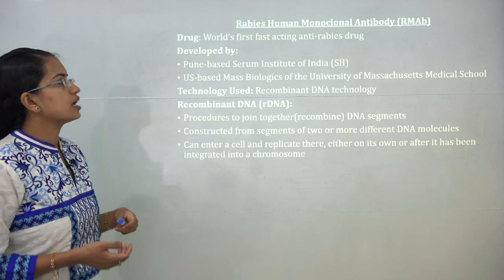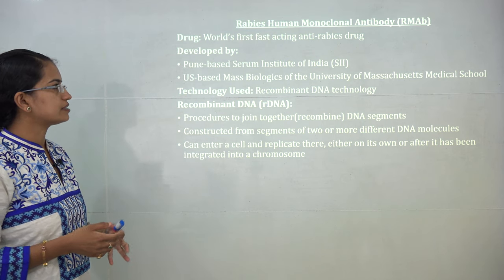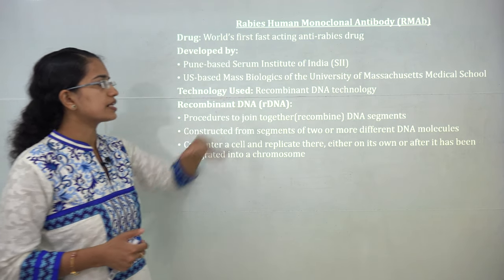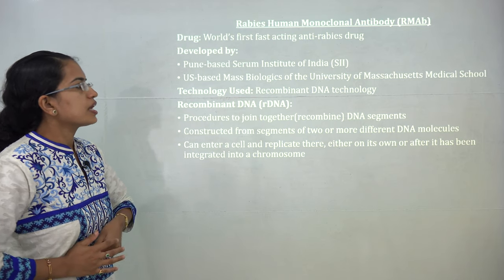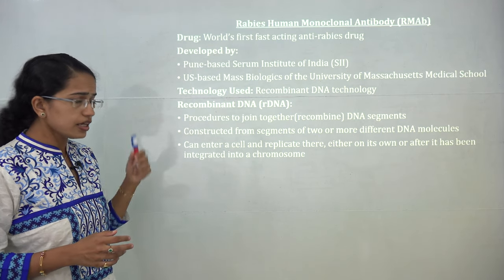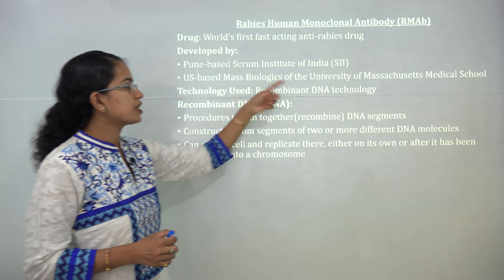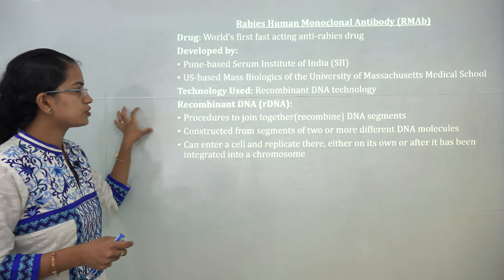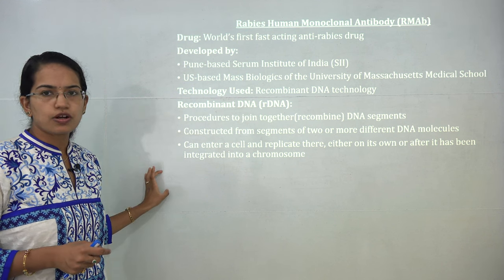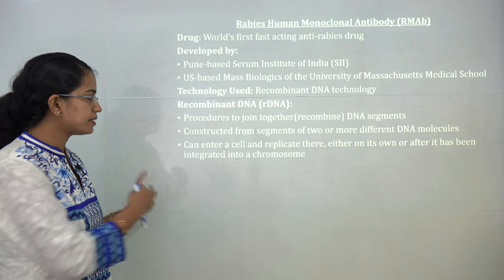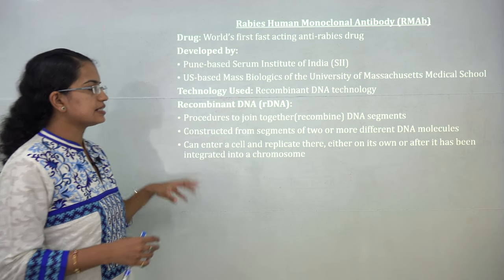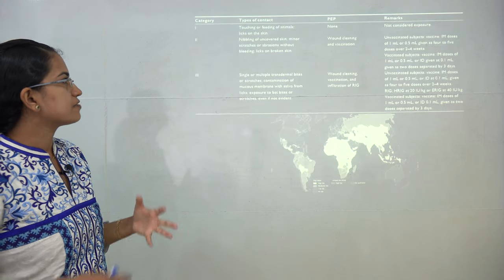RMAP is the world's first fast anti-rabies drug. It has been prepared by the Pune-based Serum Institute of India (SII), which worked along with the Massachusetts Institute on this antibody. It uses recombinant DNA technology — DNA segments are joined together to form a new recombinant version that carries traces from both DNA segments, can enter a cell, replicate on its own, and integrate with the chromosome.